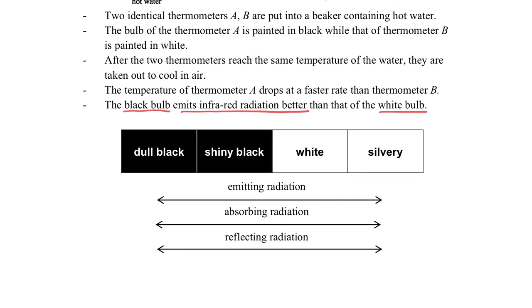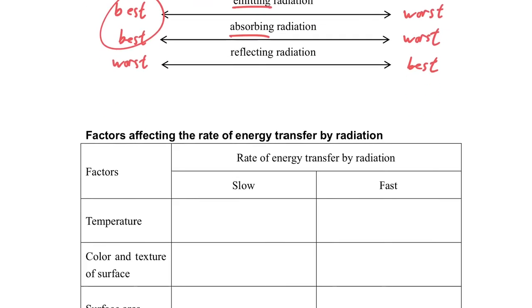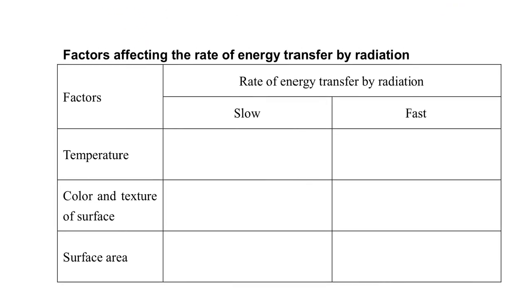So let's make a short conclusion here. For the dull black surface, it's the best for emitting radiation while silver is the worst. And it's also the best for absorbing radiation. While reflecting radiation, the dull black will be the worst. So you can see that the dull black surface is not just a good absorber but also a good emitter of radiation.